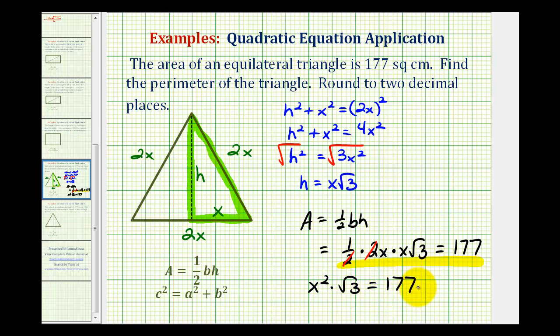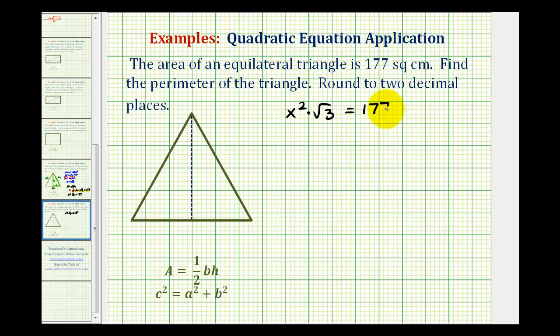Let's go ahead and take this on to the next page. We'll divide both sides by square root 3. So we have x squared equals 177 divided by square root 3. And now we'll take the square root of both sides of the equation. We're only concerned about the positive square root or principal square root here.